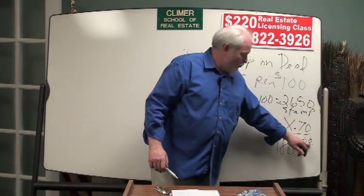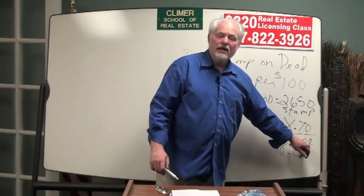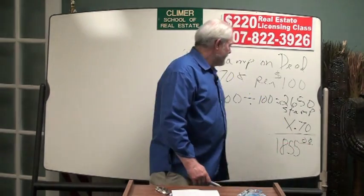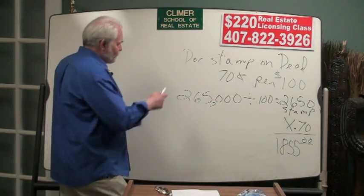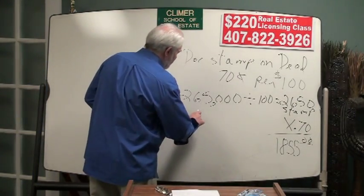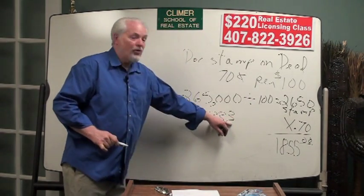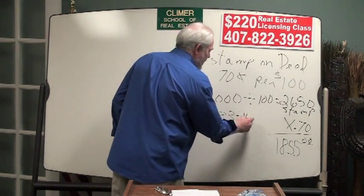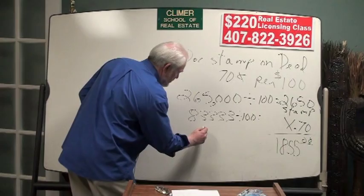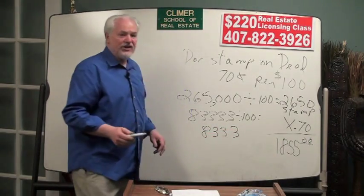A little tip, doc stamps on the deed will always end in zero. If they don't end in zero, you got the wrong answer. They always end in zero. And the reason they do is because if you bought a property for, say, $83,333, that's the price of the property, we're going to divide that by 100, and we see that you need 833.3 stamps.